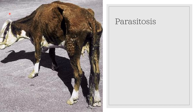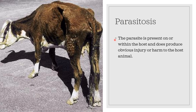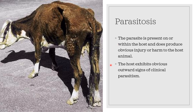Another important term is parasitosis. An emaciated cow that probably harbors millions of roundworms in its GIT exhibits obvious outward clinical signs. This is referred to as parasitosis, where the parasite is present on or within the host and does produce obvious injury or harm to the host. The host exhibits obvious outward signs of clinical parasitism.